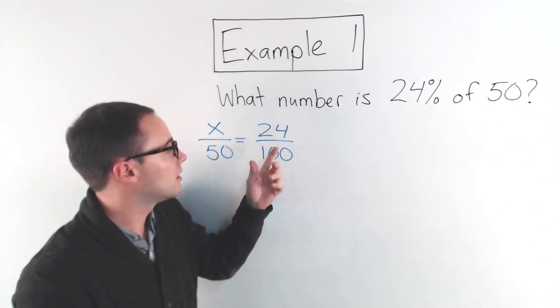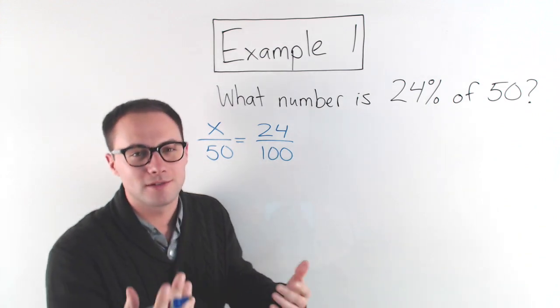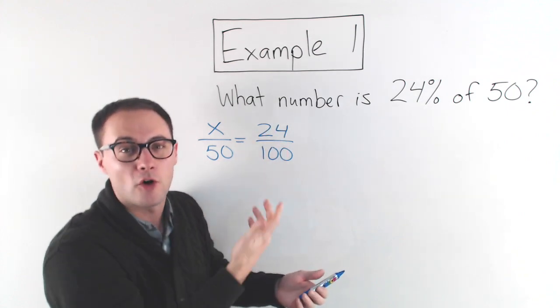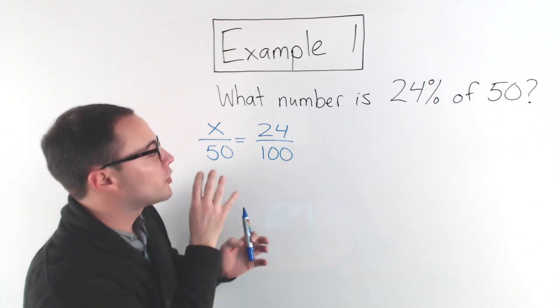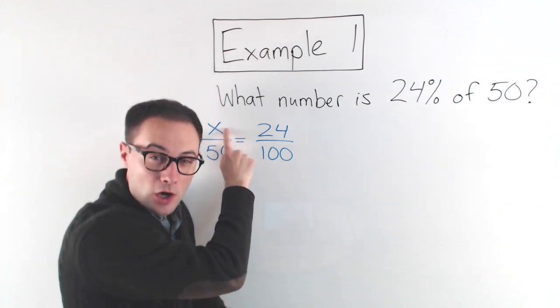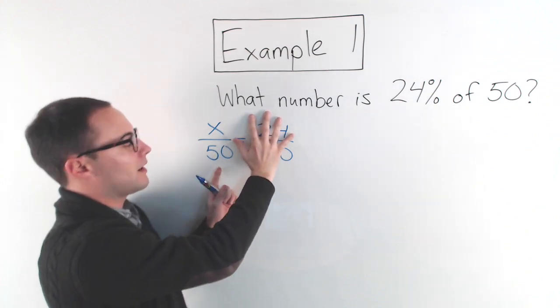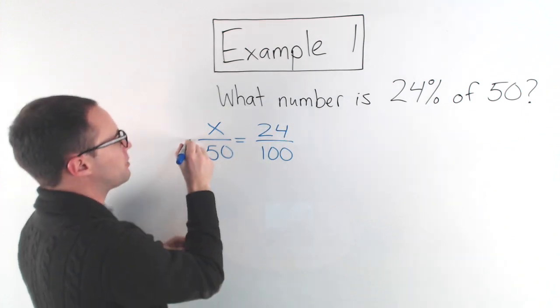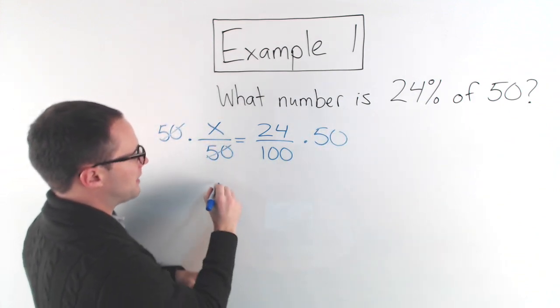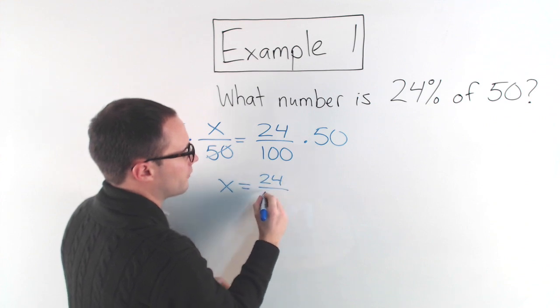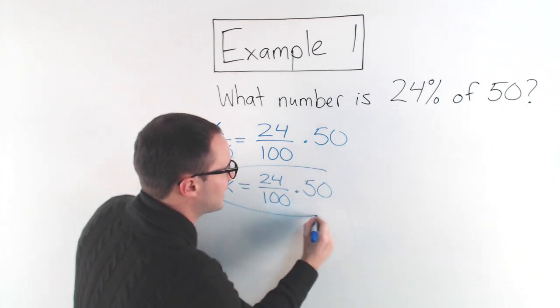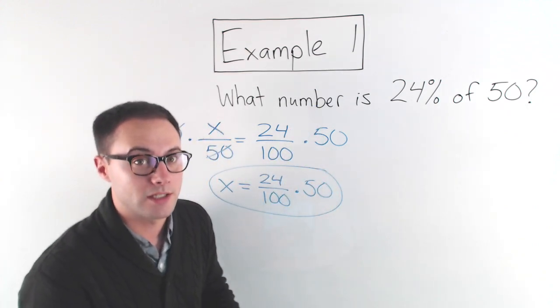Now, if you were going to solve this, we would solve the proportion either with cross products or simplify and then hopefully use some mental math. But you can also solve it just using some algebra. If you think about it, this is an equation. If I want to get X alone, solve for X, well, I would multiply both sides by 50. So if I multiply this side by 50 and this side by 50, those cancel out. And I'm left with X equals 24 over 100 times 50. This is the exact same thing as the percent equation.